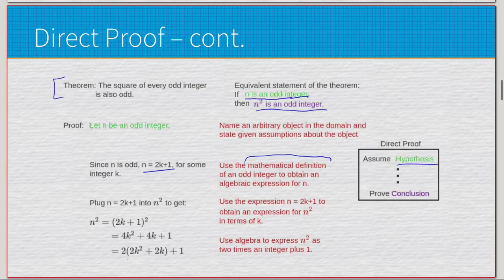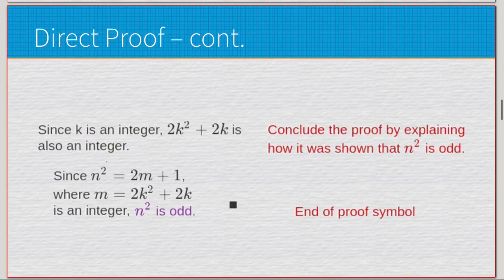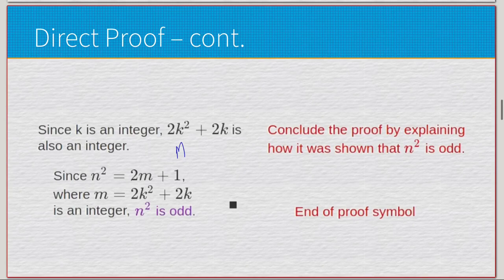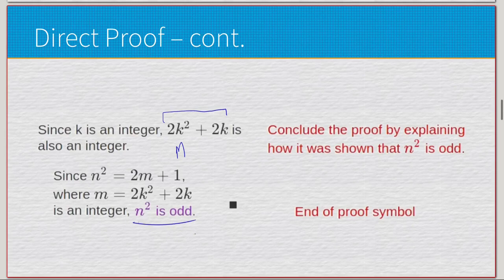With a bit of algebra we get 4k squared plus 4k plus 1. Factoring out 2 gives the form 2(2k² + 2k) + 1. Since k is an integer, 2k² + 2k is also an integer — substitute this as m. Since n squared equals 2m plus 1, which has the same form as 2k+1, n squared must be odd. It's been proven using just the mathematical definition and some algebra.